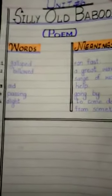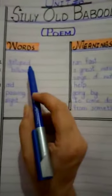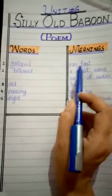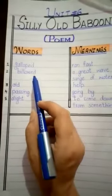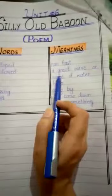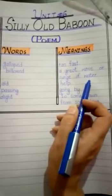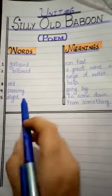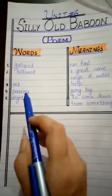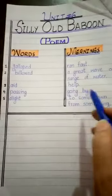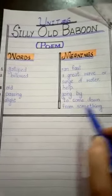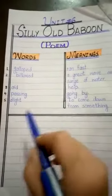Number one: 'galloped' means ran fast. Number two: 'blowed' means a great wave or surge of water. Number three: 'aid' means help. Number four: 'passing' means going by. Last word: 'alight' means to come down from something.